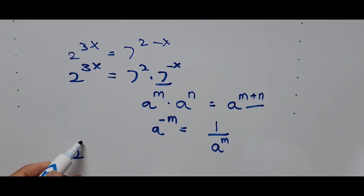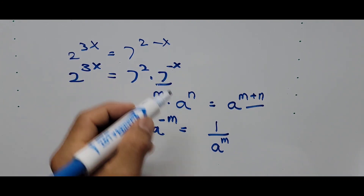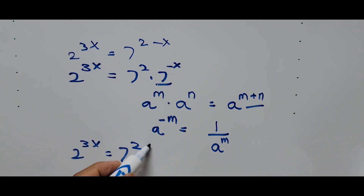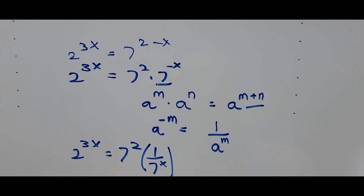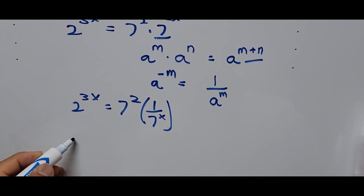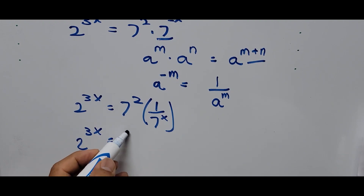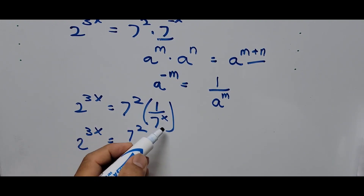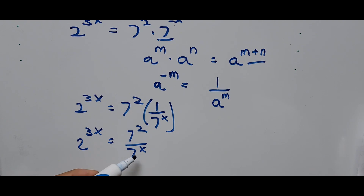Rewriting, we now have 2 raised to 3x equals 7 squared times 1 divided by 7 raised to x. Writing it again: 2 raised to 3x equals 7 squared over 7 raised to x — the exponent x is now positive.